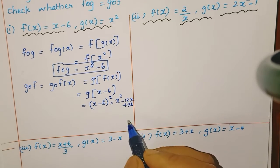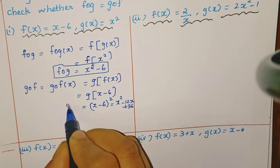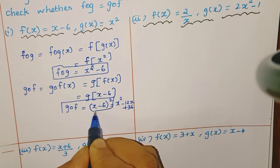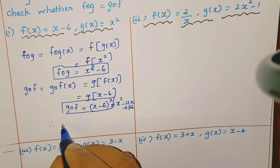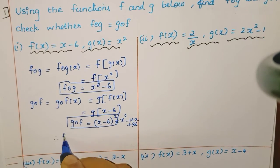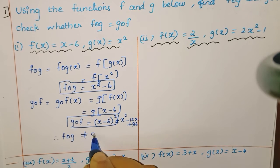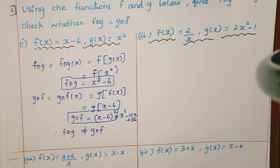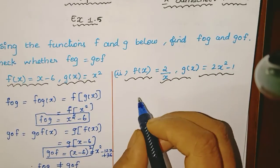Both are equal? No, they are not equal. So we can say f composition g is not equal to g composition f. Therefore, f∘g ≠ g∘f. This is a very important sum.